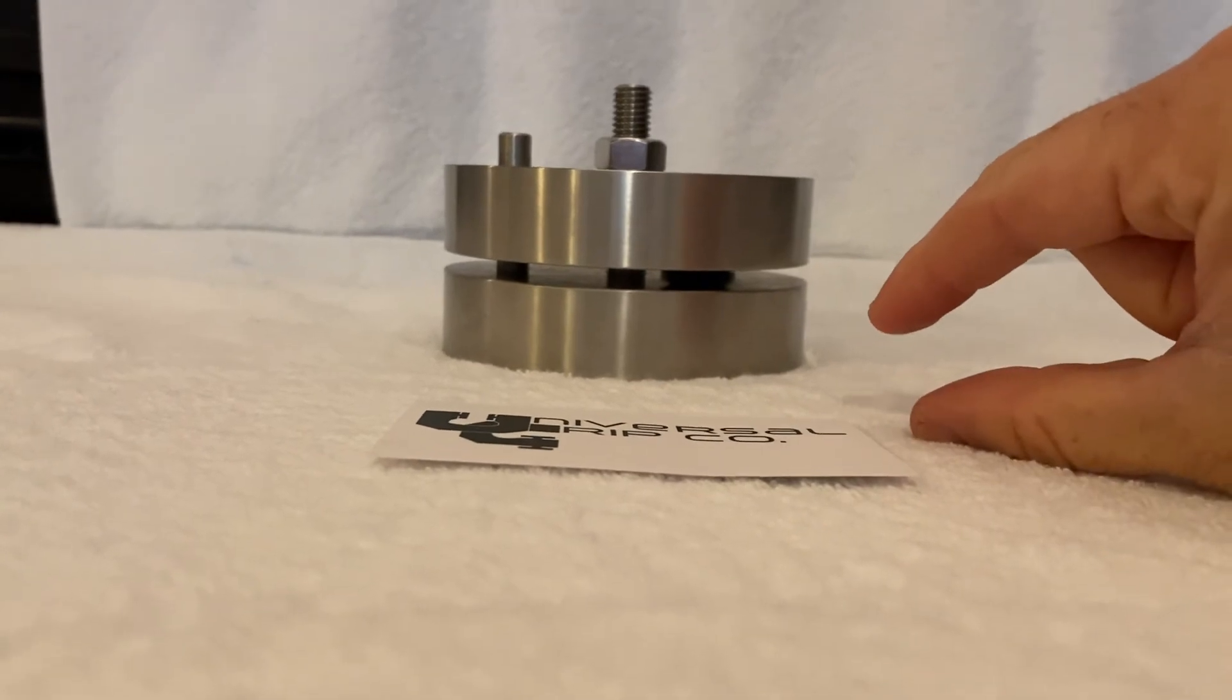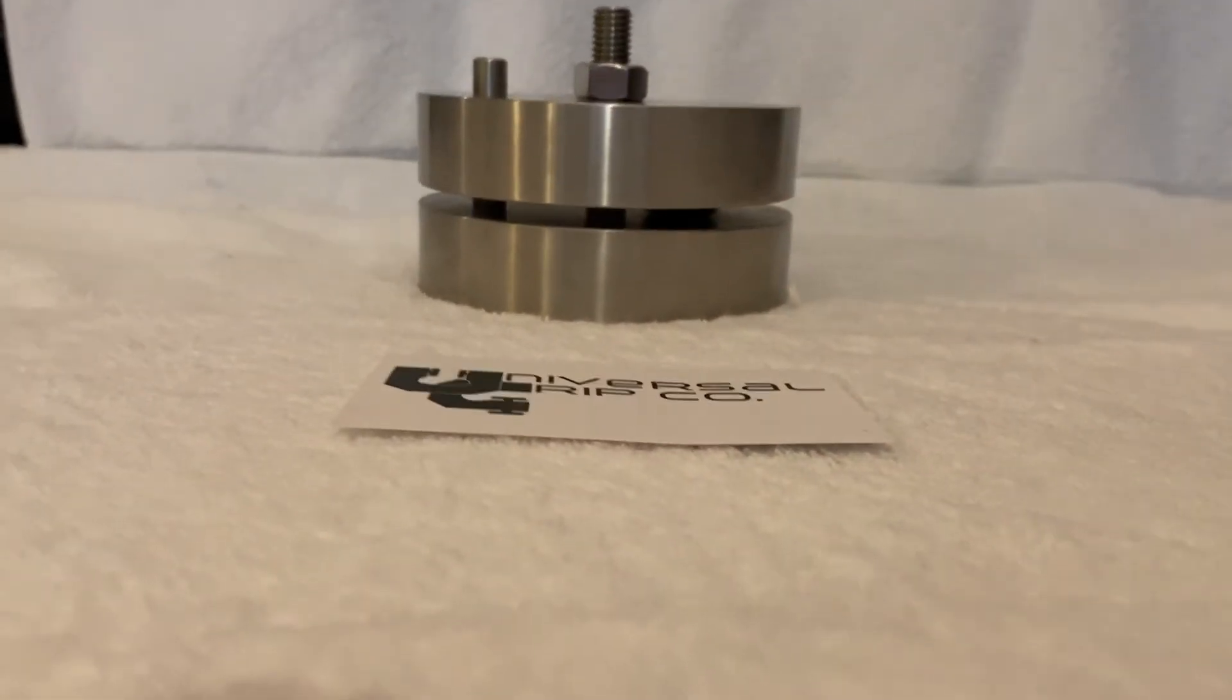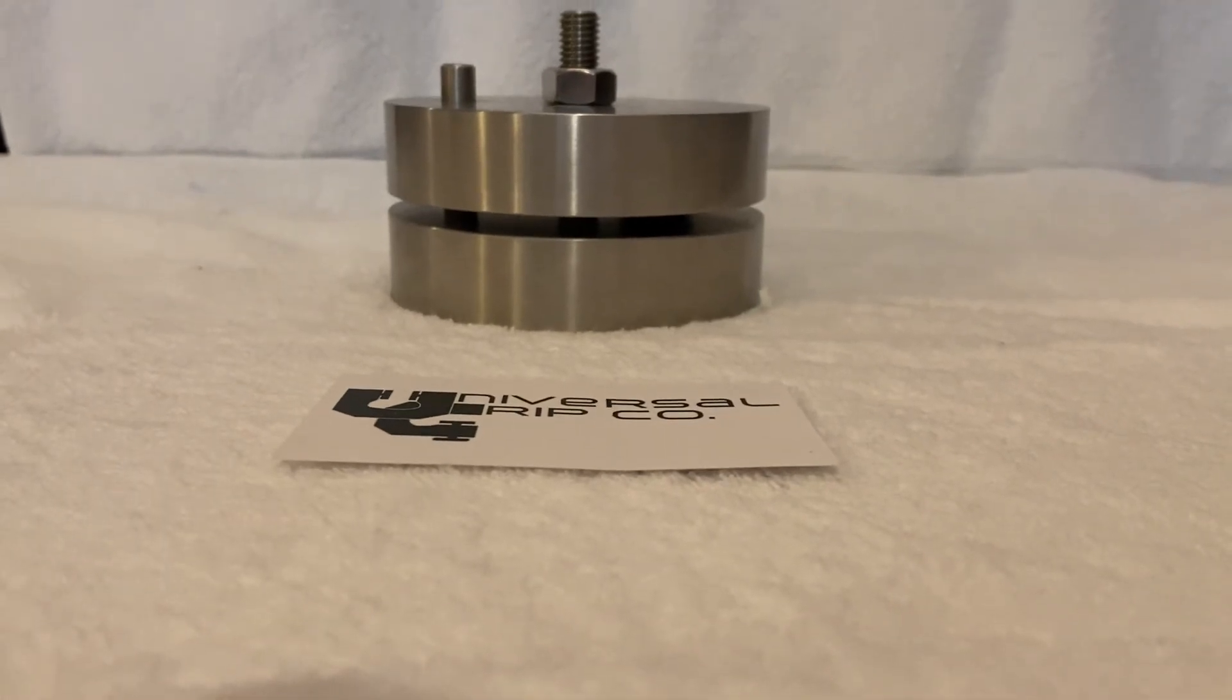You then take the sample out, measure the height again, and compare that to the original sample. That's called your compression set.